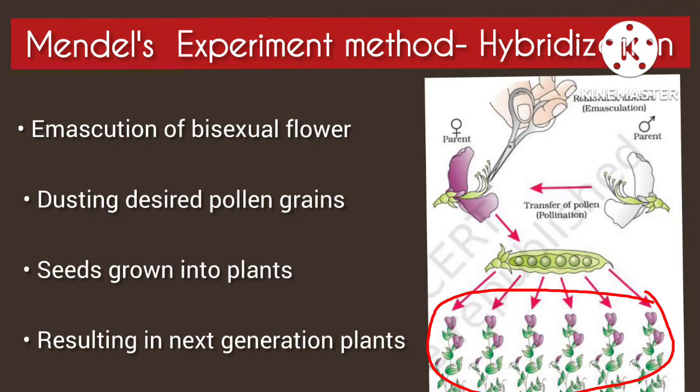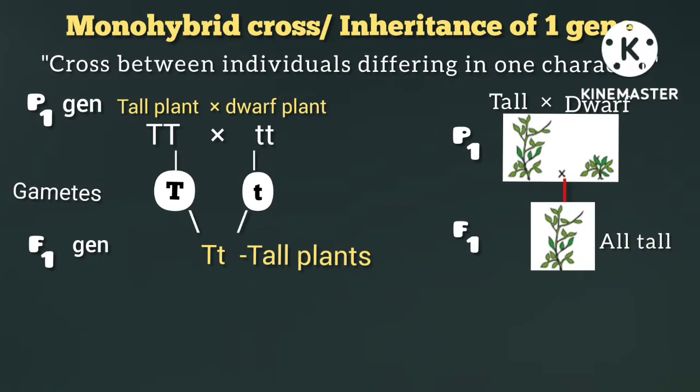When using hybridization, seeds produced go to the next generation. We will study the hybridization technique and then study the monohybrid cross. What is monohybrid cross? It is the cross between individuals differing in one character — the inheritance of one gene.